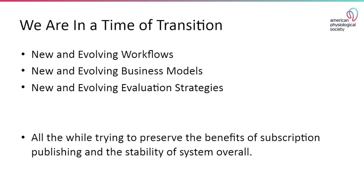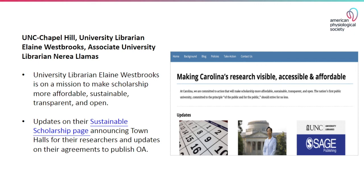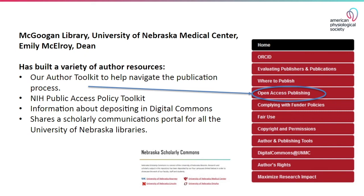All three Plan S routes require that the article or author accepted manuscript have a CC BY license applied and that the author retain their copyright. We are in a time of immense transition with new and evolving workflows, business models, and evaluation strategies. Libraries are poised to assist researchers navigating this environment — examples include Iowa State's Read, Publish and Join agreement with APS, UNC Chapel Hill's central support page, and the University of Nebraska Medical Center's comprehensive author toolkit.